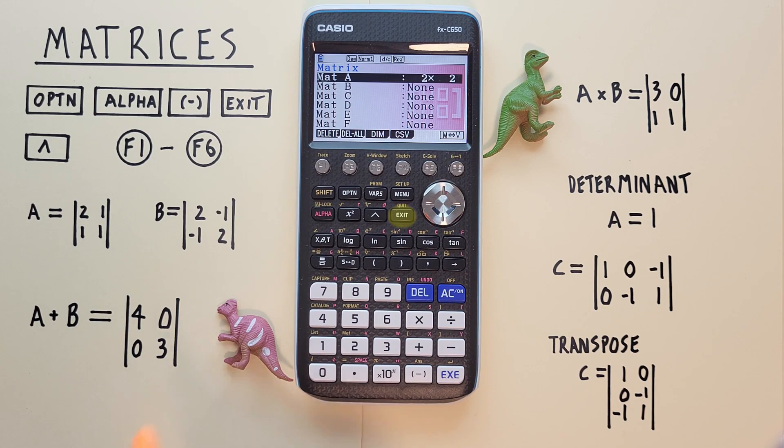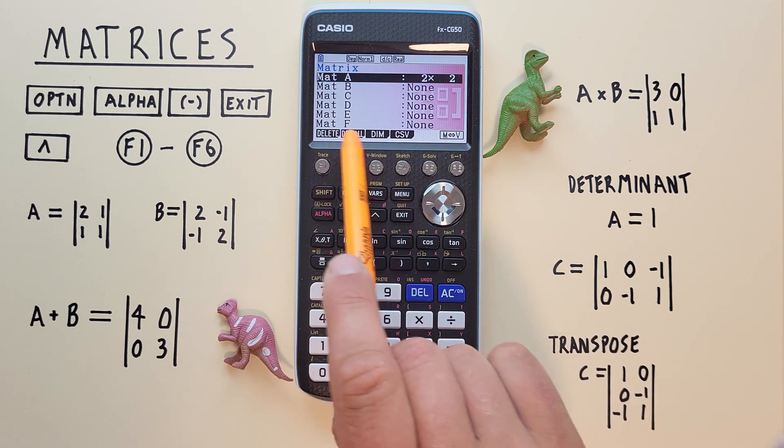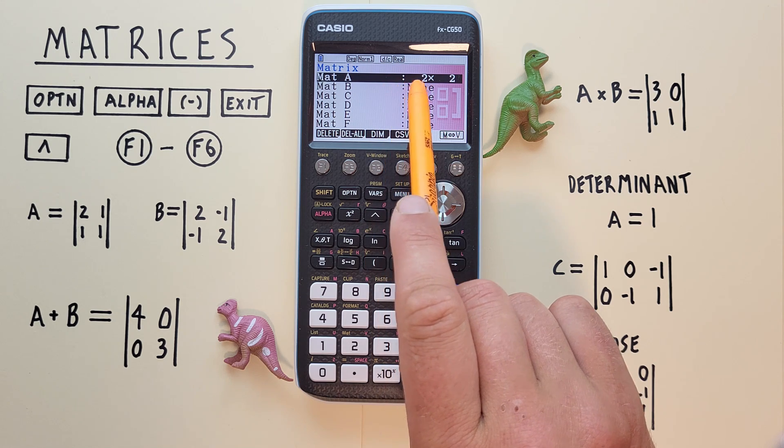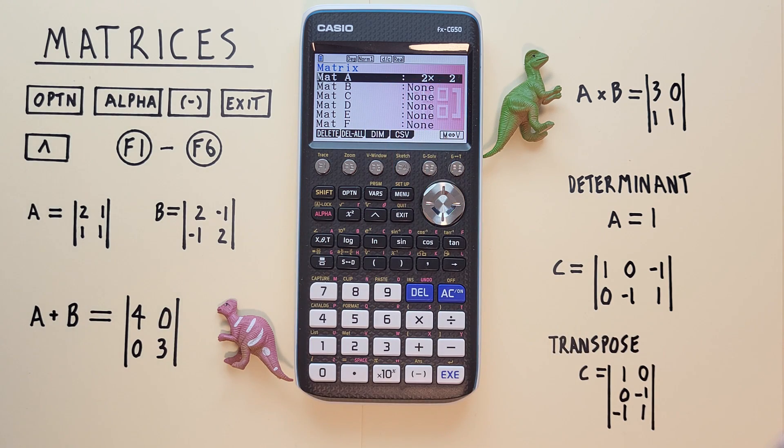And now in our matrix menu screen here, we see we have matrix A entered as a 2×2 matrix. So that means we have that matrix saved.